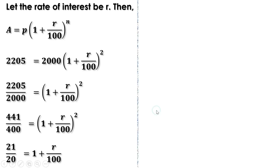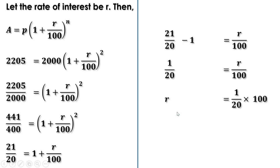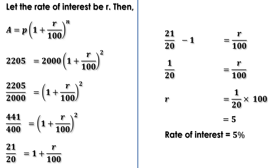Taking 1 to the other side: 21/20 - 1 = r/100. Since 1 = 20/20, we get 21/20 - 20/20 = 1/20 = r/100. Multiplying both sides by 100: r = 100/20 = 5. Therefore the rate of interest is 5 percent. The first part of the lesson is complete; we shall see the next part in the next video.